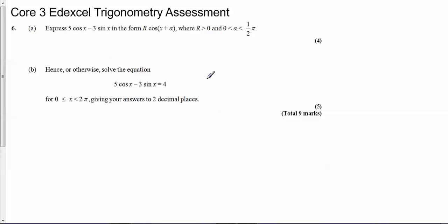Hi, this is question 6 from the trigonometry assessment for Core 3. A fairly common question for the Core 3 papers is re-expressing a sum or a difference of sines and cosines in this form here, so that's what we're going to have to start off with first. To do that, always start by expanding the form that they want you to write it in, using a compound angle formula.